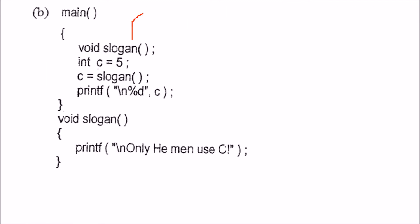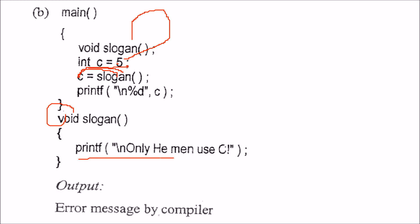Next, we have a slogan function. We have c equal to 5 and we are trying to assign the slogan function's result to c. But the function has a void return type — how can you assign void to c? There will be an error message because there needs to be some return value to assign to a variable.